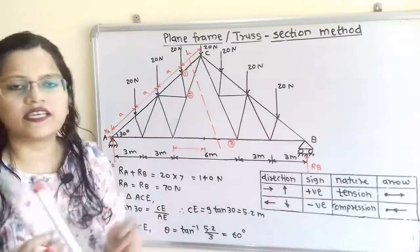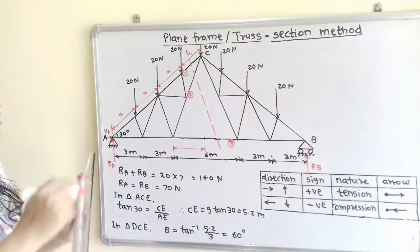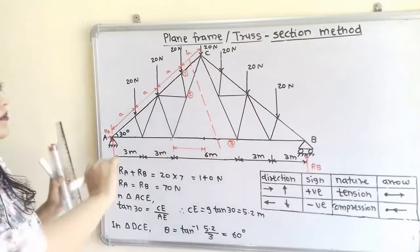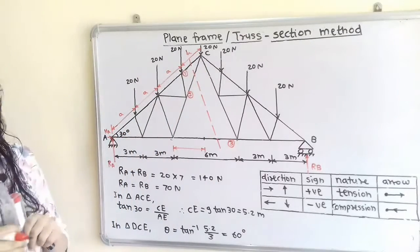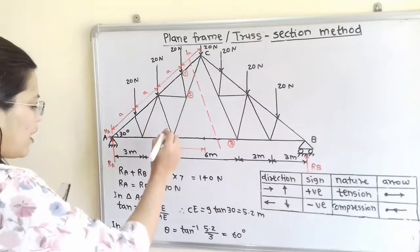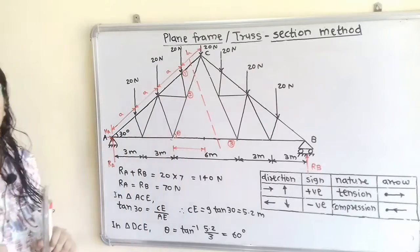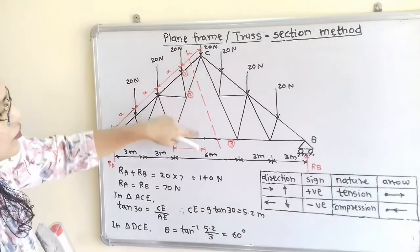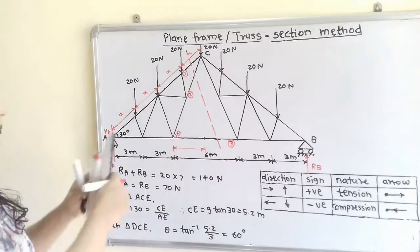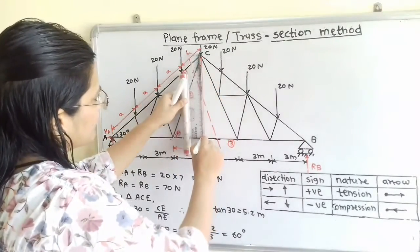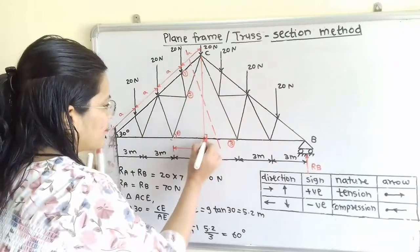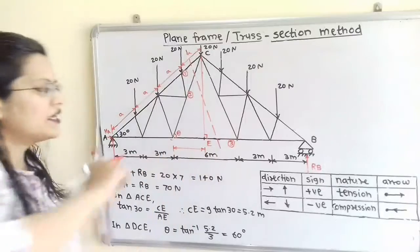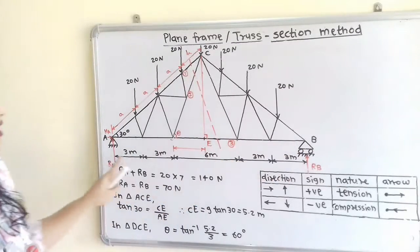If we observe, the second member is an inclined member, the third member is a horizontal member, and the first member has an angle of inclination of 30 degrees. We need to find the angle theta for the second member. To do so, we make a construction: from point C, we draw a perpendicular line onto the horizontal line AB. The foot of this perpendicular is the midpoint of AB, which we call E.